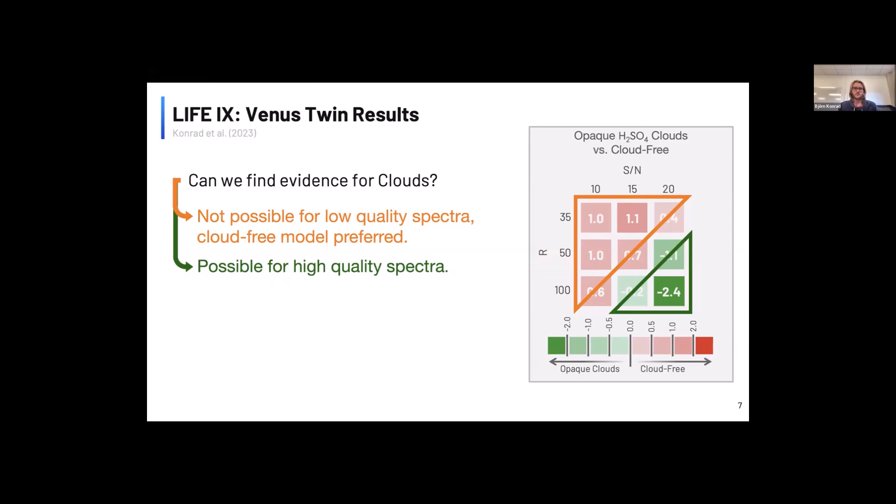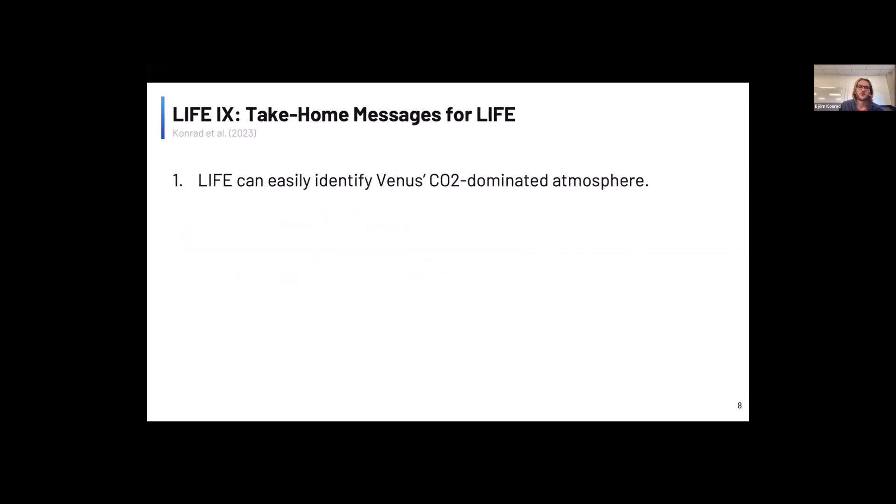So just very briefly to end it off, what are my main take-home messages for LIFE from this study? One is that LIFE can easily identify that Venus's atmosphere is CO2-dominated, which is good. So this also means that we can relatively easily differentiate between a Venus-like exoplanet and an Earth-like exoplanet where the atmosphere is not dominated by CO2.